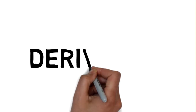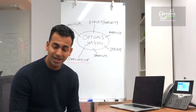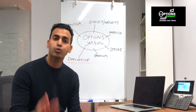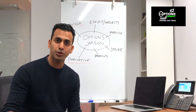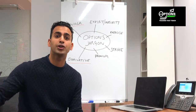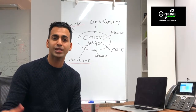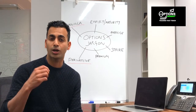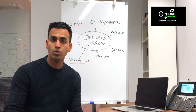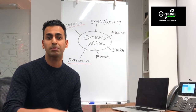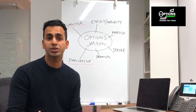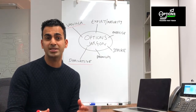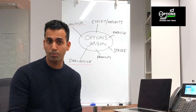The next term is derivative. An option is a type of derivative. A derivative is just a product or a contract that derives its value from a different underlying asset. That underlying asset could be a commodity like oil or gold, it could be a currency like the pound or the euro, or it could be a security, which is another fancy name for a stock or a bond.